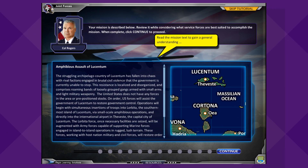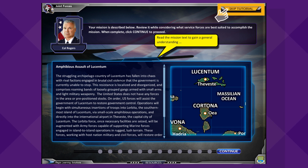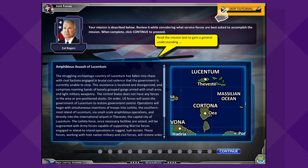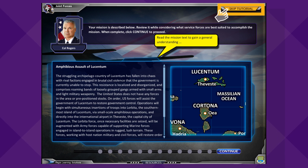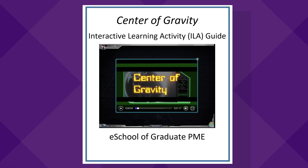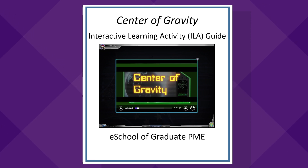In addition to the resource tab, each ILA features tutorial call-out text in yellow. You may disable this feature, if you desire, by clicking "Skip Tutorial" in the upper right-hand corner of the ILA screen. Outside the ILA, the learning management system has a link to a detailed player's guide. This guide provides screen-by-screen helpful tips specific to the ILA that supplement the tutorials.